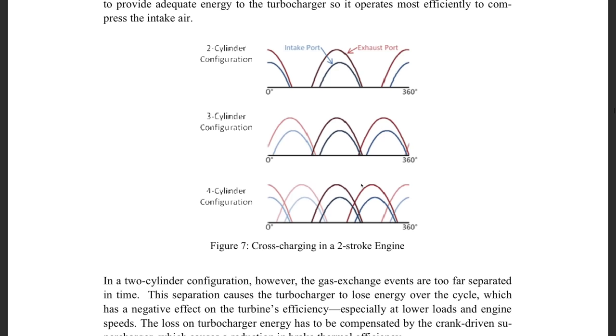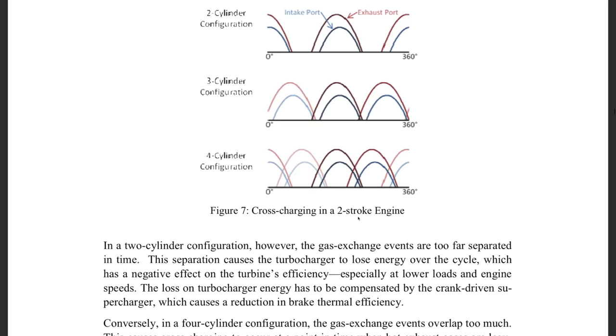With four cylinders, there is too much overlap between the exhaust ports opening in one cylinder and the intake ports opening on a different cylinder. This results in additional residual gas being left behind, decreasing scavenging efficiency, which reduces overall efficiency.